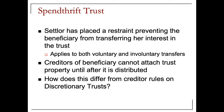If a trustee of a discretionary trust gets a Hamilton order, they must stop making payments to the beneficiary and instead pay the creditor of the beneficiary directly. However, if there is a spendthrift provision, the creditor is prohibited from attaching the property using a Hamilton order. The only redress the creditor has is to attach the property once legal title has moved to the beneficiary — once it's been distributed.